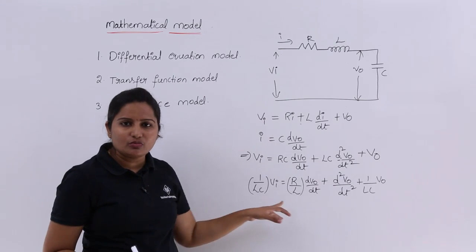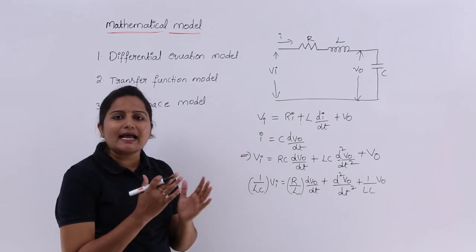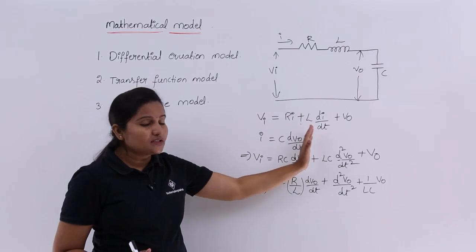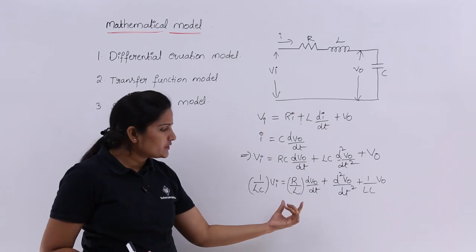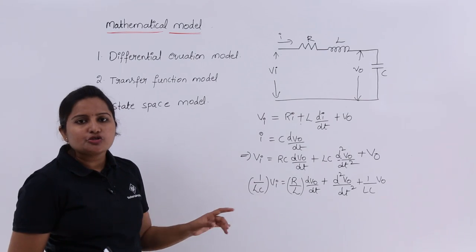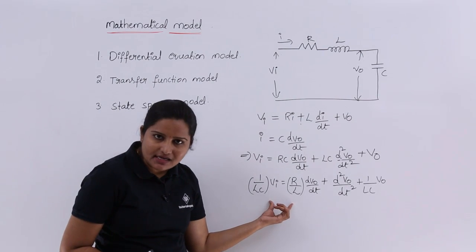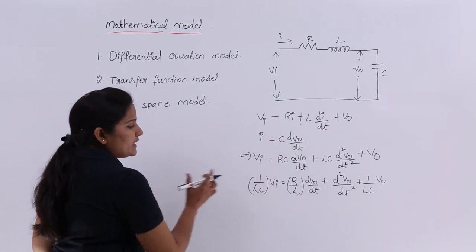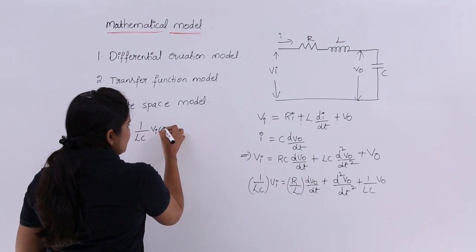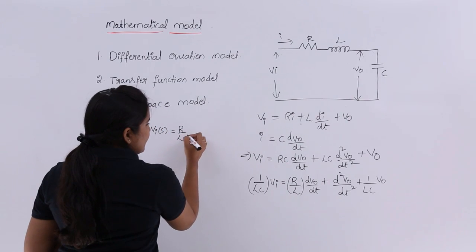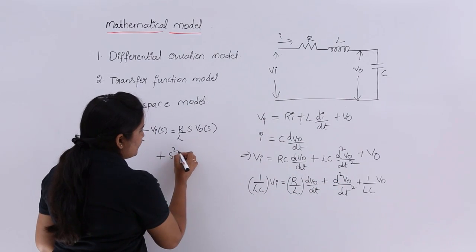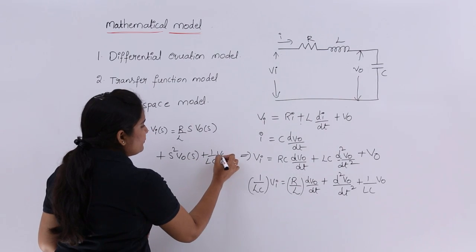If they ask for the transfer function model, to get it from the differential equation form you need to apply the Laplace transform. Applying Laplace transform: (1/LC)·Vi(S) = (R/L)·S·V_naught(S) + S²·V_naught(S) + (1/LC)·V_naught(S).